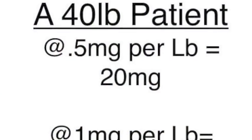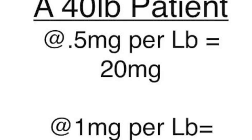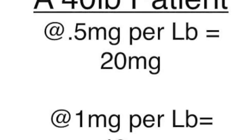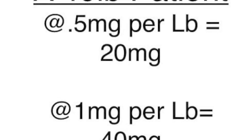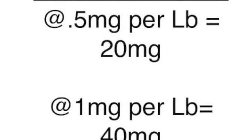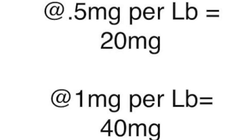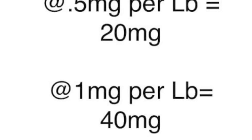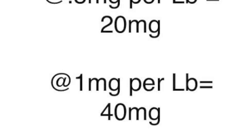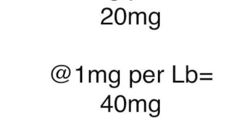Hypothetically, for instance, if you wanted to wean your child onto CBD and start with a low dose and move up — say 0.5 milligrams per pound of body weight — if you've got a 40-pound child, you multiply 40 by 0.5, and that's 20 milligrams. If you then want to double that dose and move it up to 1 milligram per pound, that's just 1 times 40 — milligrams per pound times the body weight of the child — so 1 times 40 is 40 milligrams.